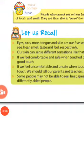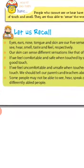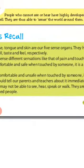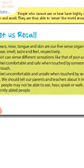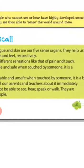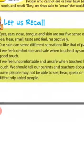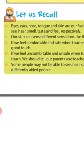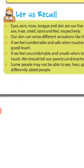In homework, you will write these five points. First, eyes, ears, nose, tongue and skin are our five sense organs. They help us to see, hear, smell, taste and feel respectively.